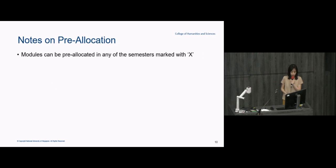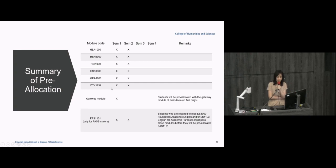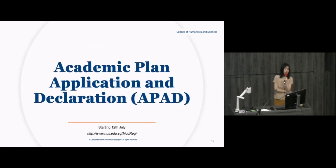In your first year, you don't have a lot of free modules to choose. In semester one you're going to get two integrated modules, one of GEA or DTK, and one gateway module — that's four. You may also get the writing module in semester one. So in your first semester you'll probably have either no free module or just one to choose. In semester two it's a bit better — one or two free modules. Because of the pre-allocation, you don't need to do much in your first year on selecting modules in ModRec.